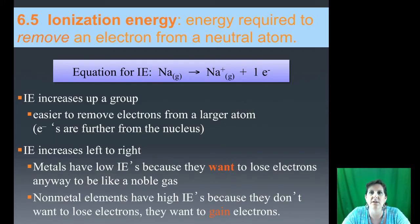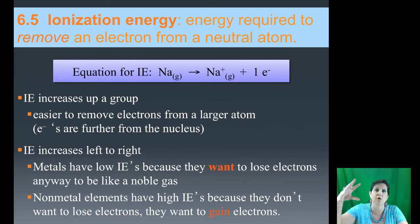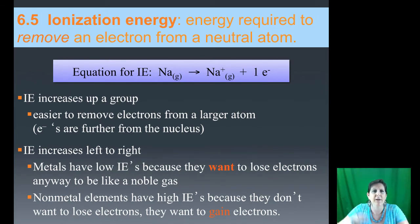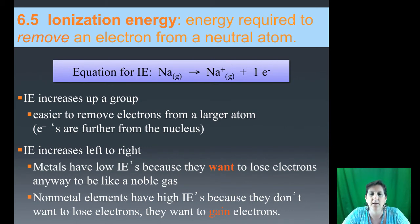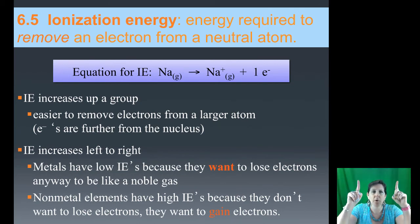Next is ionization energy — the energy required to remove an electron from a neutral atom. You can't just pull an electron away without spending energy. The equation for ionization energy, using sodium as an example: a sodium gas atom becomes Na⁺ plus the electron that was removed. Ionization energy increases as we go up a column or group.